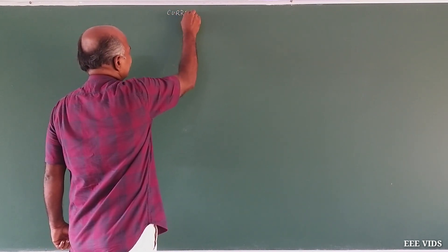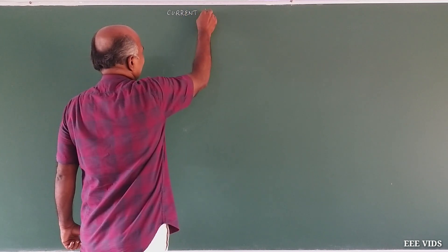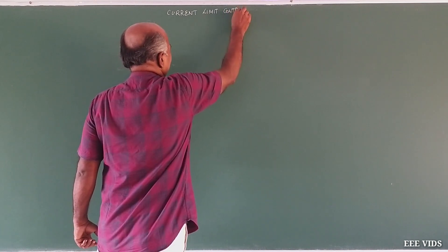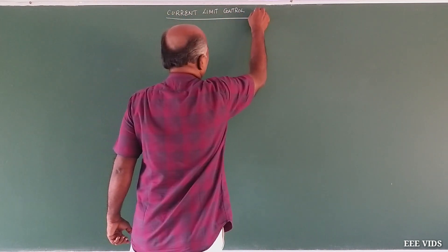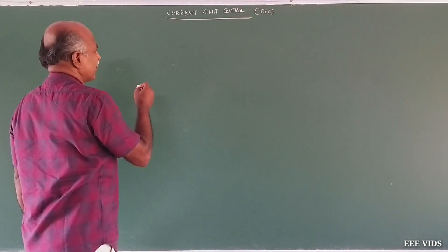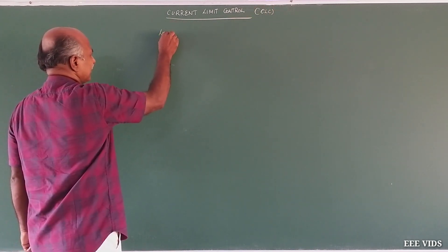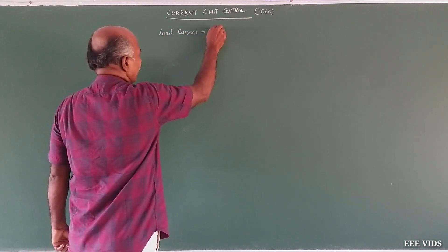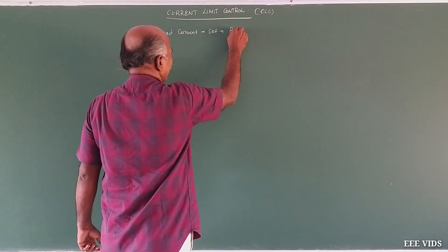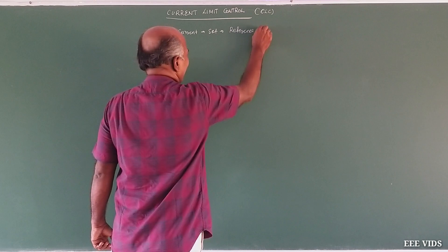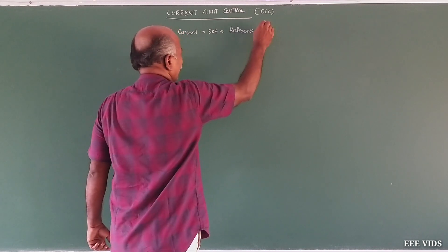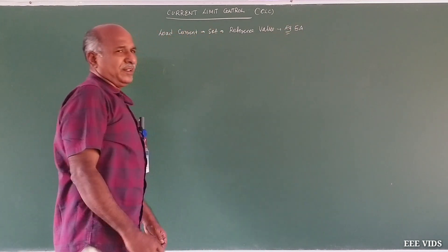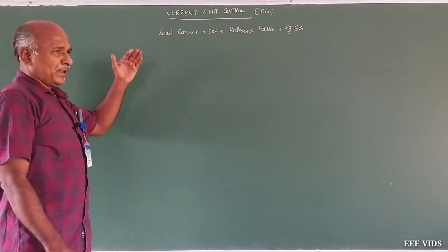Current limit control — CLC. In this method, we set a reference value for the load current. For example, if we set a 5A load current as reference, the chopper operates to maintain that limit. So this is the current limit control.